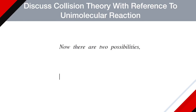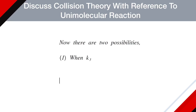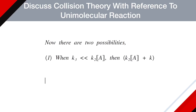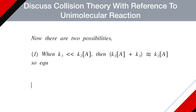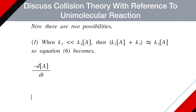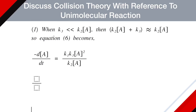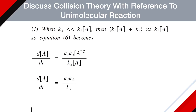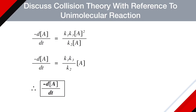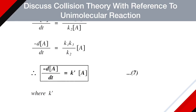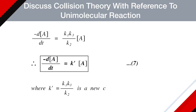There are two possibilities. First, when K3 is very small compared to K2[A], then K2[A] + K3 ≈ K2[A]. Equation 6 becomes: -d[A]/dt = K1K3[A]² / (K2[A]), which simplifies to -d[A]/dt = (K1K3/K2)[A], or -d[A]/dt = K'[A] (equation 7), where K' = K1K3/K2 is a new rate constant. This represents a first-order (unimolecular) reaction.